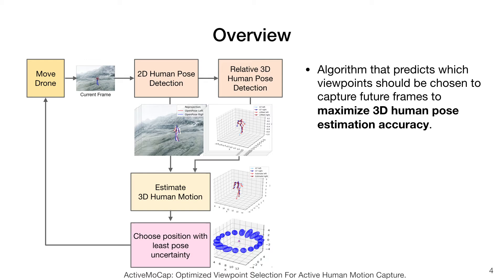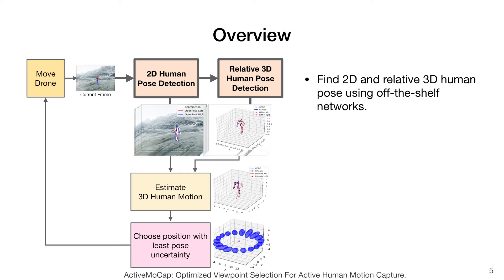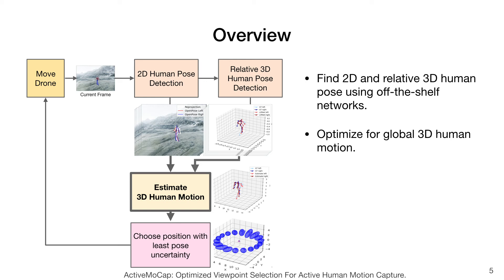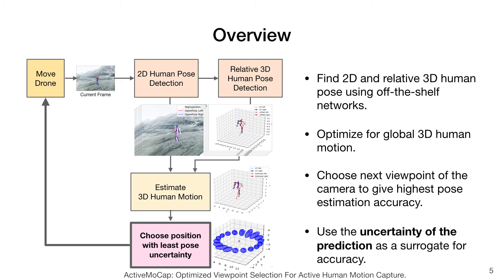Specifically, given a short video sequence, we introduce an algorithm that predicts which viewpoints should be chosen to capture future frames so as to maximize 3D human pose estimation accuracy. From the current frame, we find the 2D and relative 3D human pose using off-the-shelf networks. The 2D pose and relative 3D pose of the last k-frames is then used to optimize for the global 3D human motion. The next view of the camera is chosen so that we maximize a utility function designed to predict pose estimation accuracy.